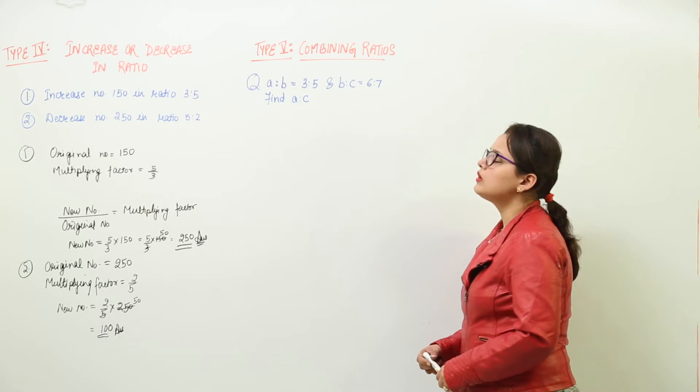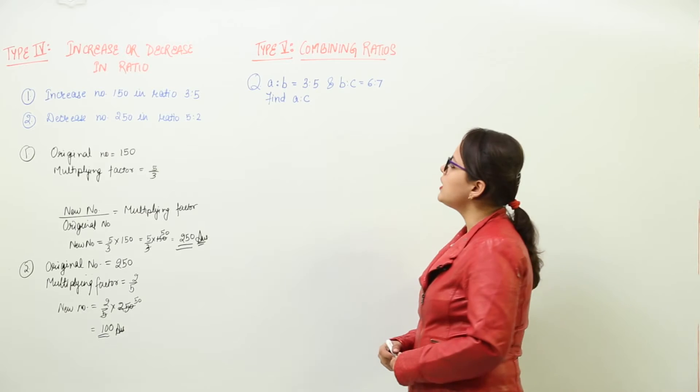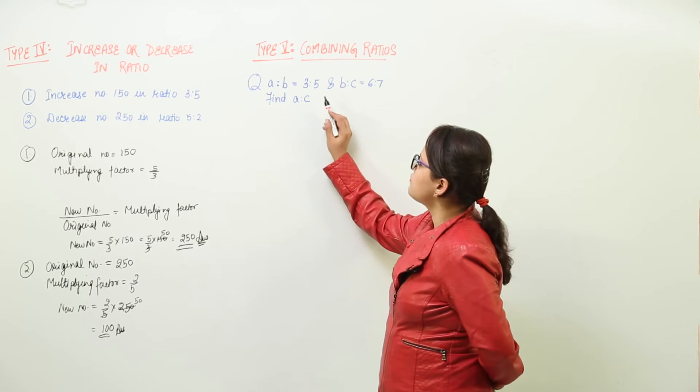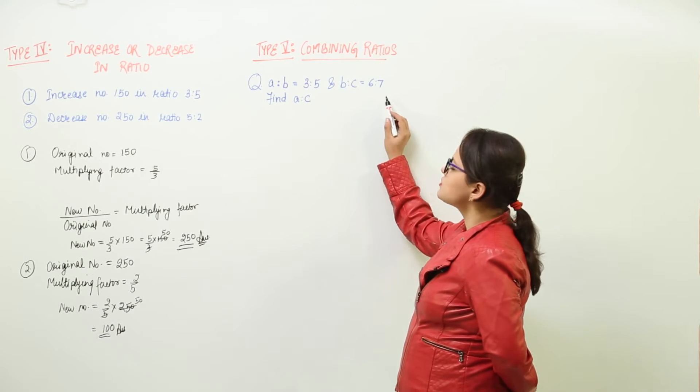Now we have to learn how to combine ratios. If A is to B is given as 3 is to 5, and B is to C is given as 6 is to 7,